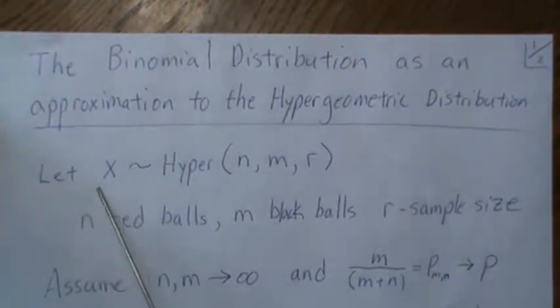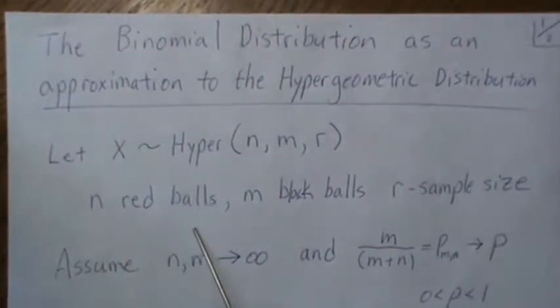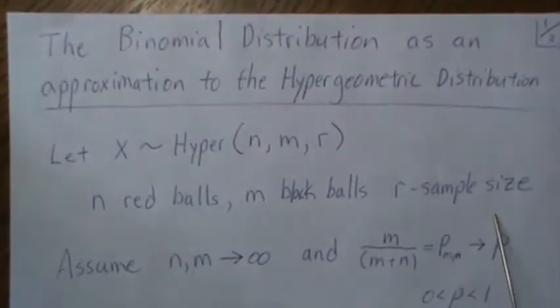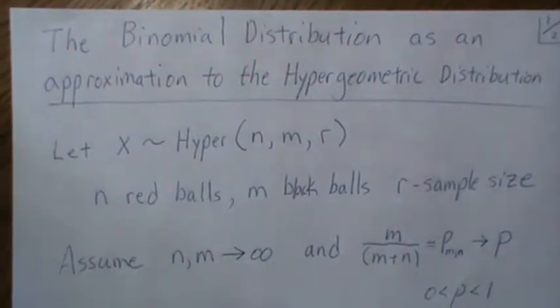So let's let X be hypergeometric, which is equivalent to saying an urn having n red balls, m black balls, and we take a sample of size r, and then we look at the number of red balls or the number of black balls in the sample.